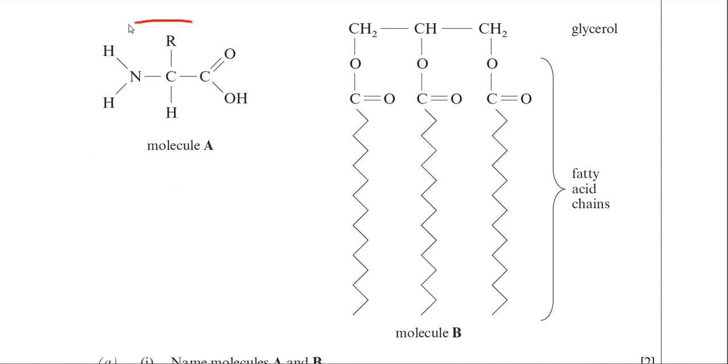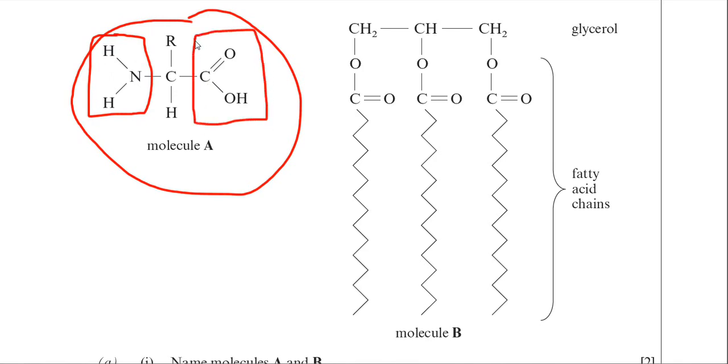Basically, the first molecule is an amino acid. The reason why, or how you can tell, is you've got that amine group on the end there, the NH2 group, and the other end of the molecule, you have the acid group. So that's the classic features there of an amino acid.